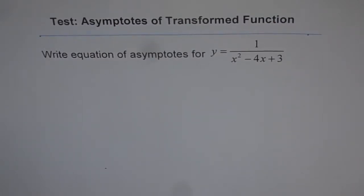Here is a test problem to find asymptotes of a transformed function. The question is: write the equation of asymptotes for y equals 1 over x squared minus 4x plus 3.